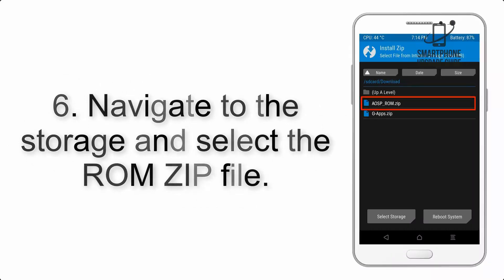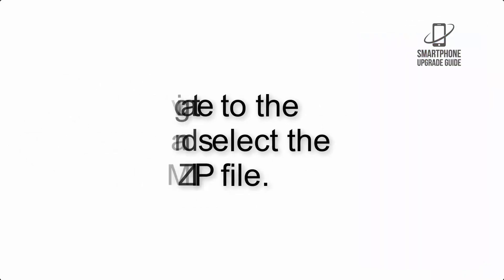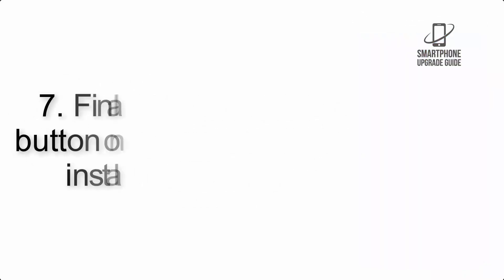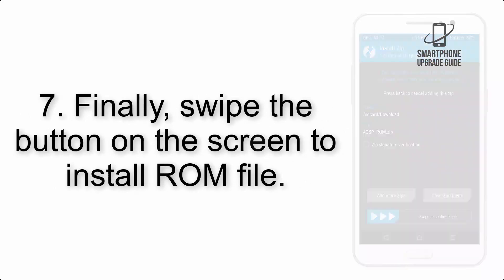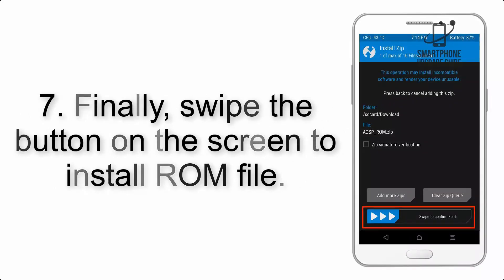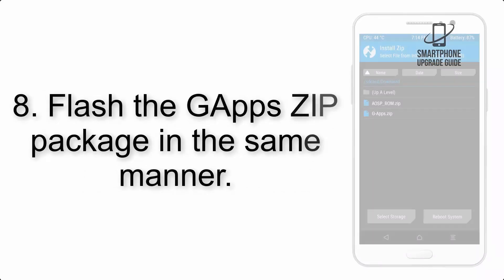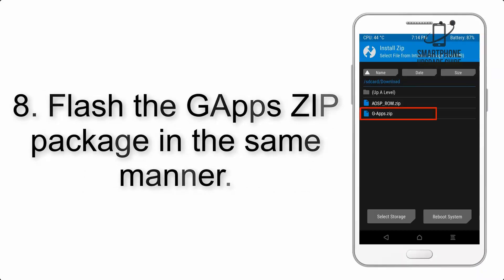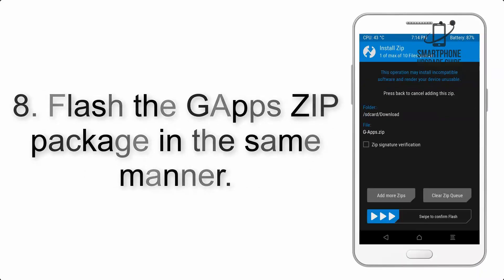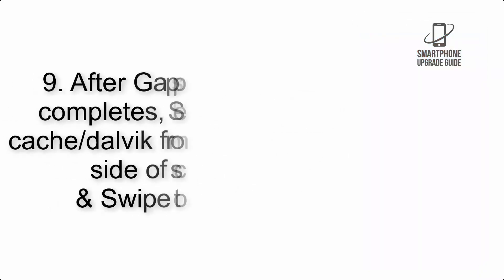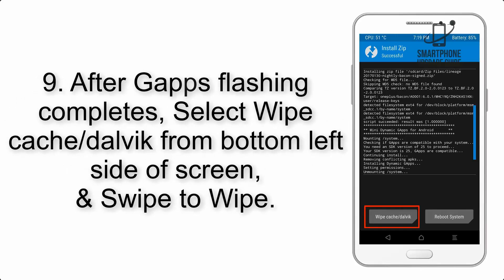Step 5: Go back to the recovery main screen and tap on the Install button. Step 6: Navigate to the storage and select the ROM zip file. Step 7: Finally, swipe the button on the screen to install the ROM file.